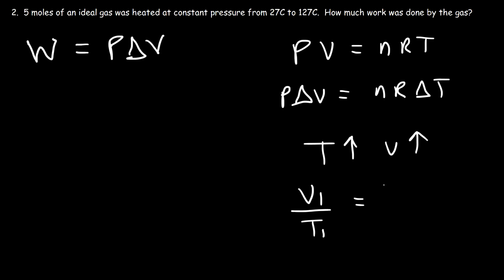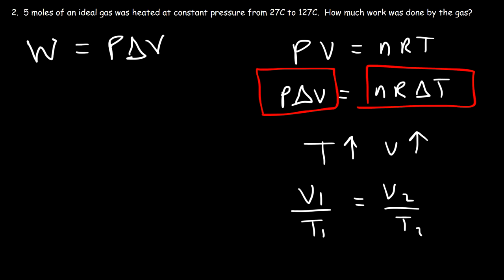At constant pressure, if you increase the temperature the volume will increase, based on Charles' law: V₁/T₁ = V₂/T₂. So we replace P ΔV with nR ΔT. To calculate the work required to heat a gas from 27 to 127°C at constant pressure, use the formula W = nR ΔT.